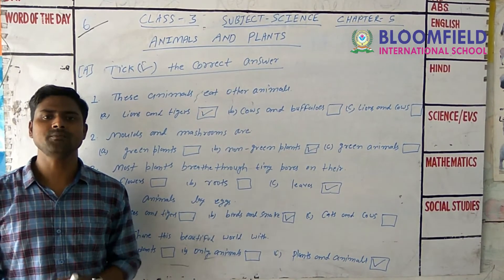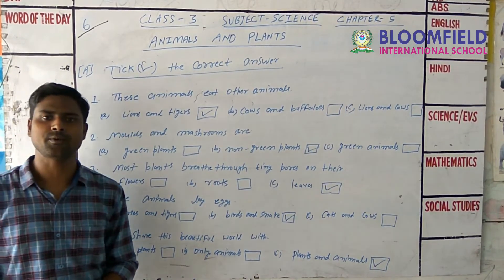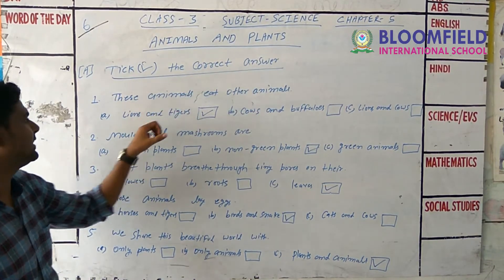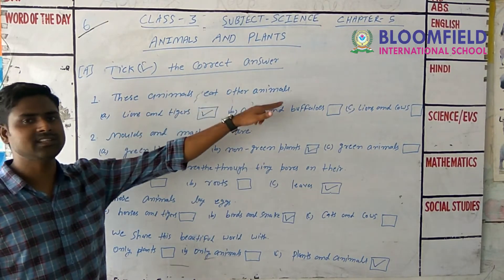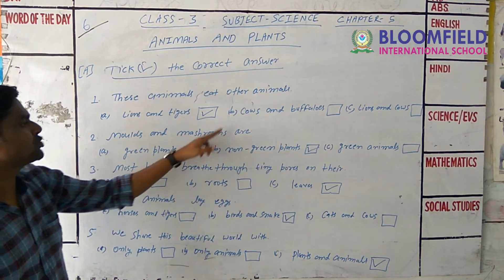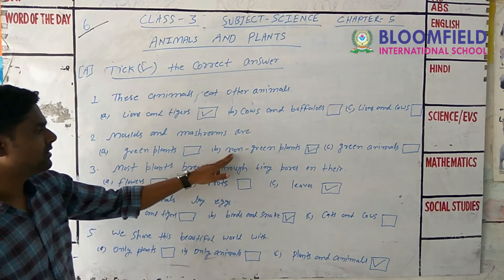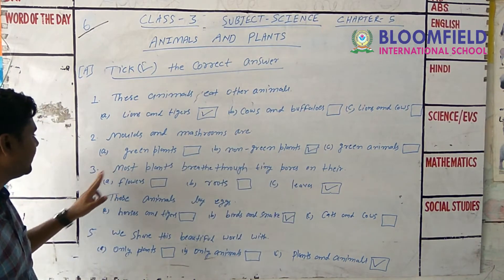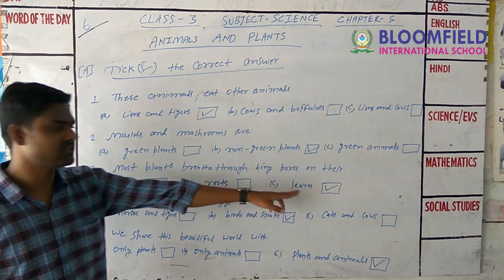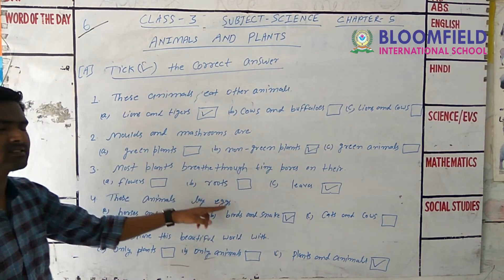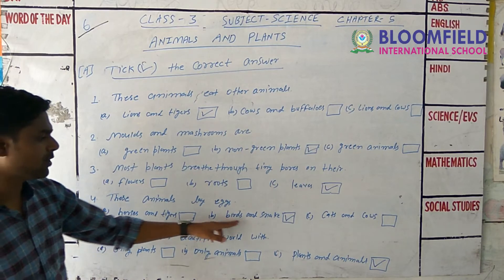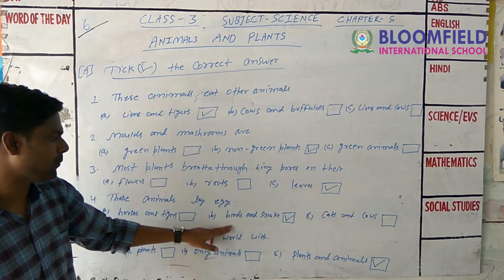After the chapter, we will solve some objective exercises. These animals eat other animals — the answer is lions and tigers. Molds and mushrooms are non-green plants. Most plants breathe through tiny pores on their leaves. These animals lay eggs — the answer is birds and snakes.